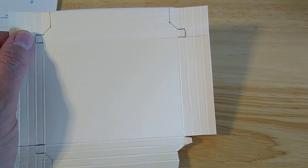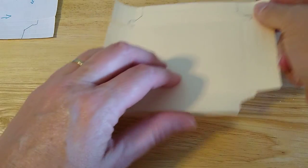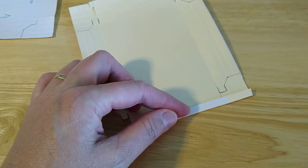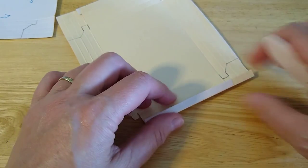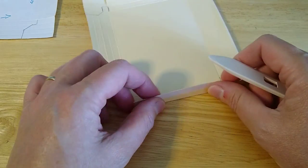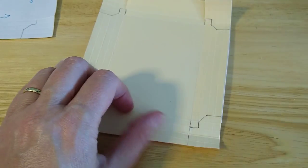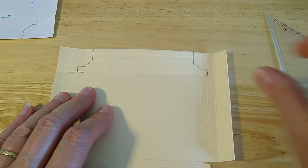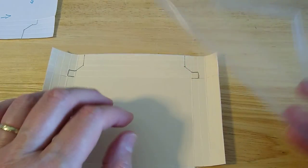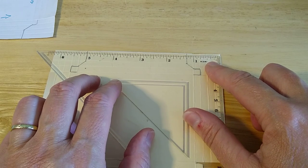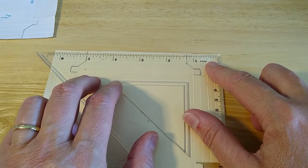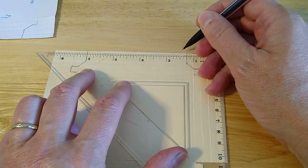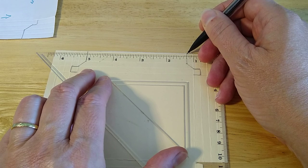After you have scored your piece of cardstock, you will fold and burnish all score lines that you just made on all sides. After that, you will get your ruler. You will go to the long side of your cardstock. I like to use this ruler because you can see through it. You will mark your cardstock at one and one fourth.